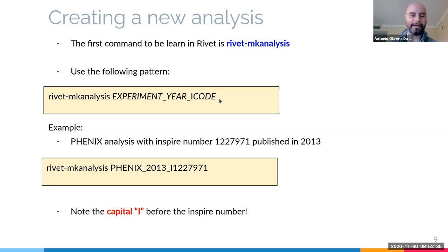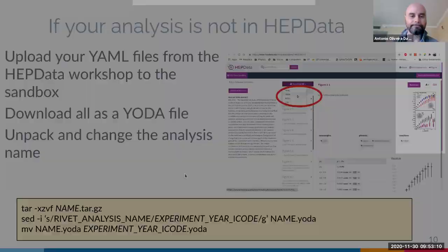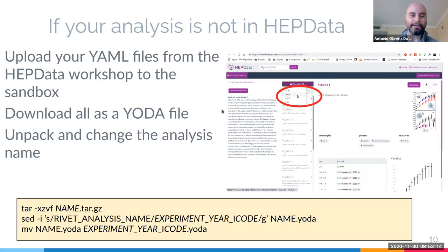In the sed command on slide 10, you need to replace 'RIVET_ANALYSIS_NAME' with your analysis name, and also rename the downloaded YODA file from HEPdata's garbled sandbox name to 'EXPERIMENT_YEAR_ICODE.yoda'. You need to put this YODA file inside your working directory on RCF if you're working on RCF. Note that the 'name' in 'rivet_analysis_name' is the default placeholder string inside the YODA file, not something you type yourself.